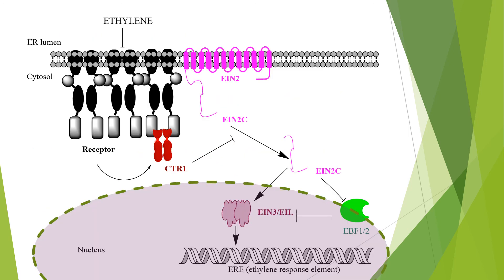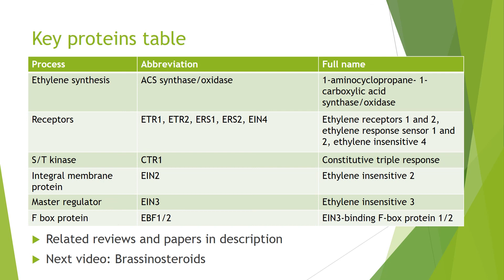Overall, the ER membrane has large complexes of receptor clusters that interact with CTR1 and EIN2. With ethylene present, CTR1 is inactive, and so EIN2C can stabilize EIN3 in the nucleus. EIN3 can then negatively regulate the signaling through feedback loops, often through transcription, and can also induce transcriptional waves to create specific responses — for example, the transcription of the ERF family of transcription factors. I hope the video is helpful, and the next video will be on brassinosteroids.